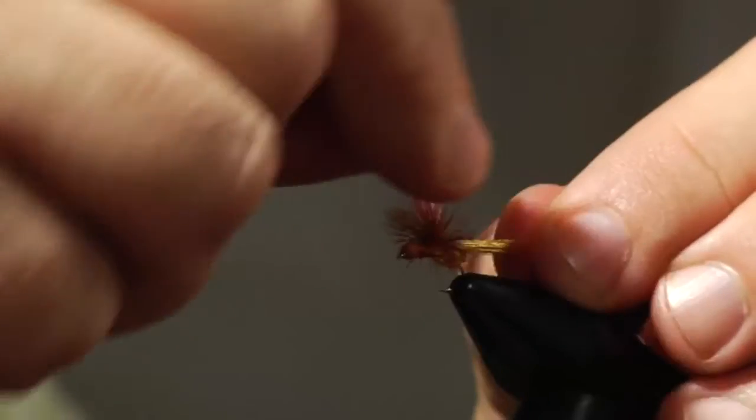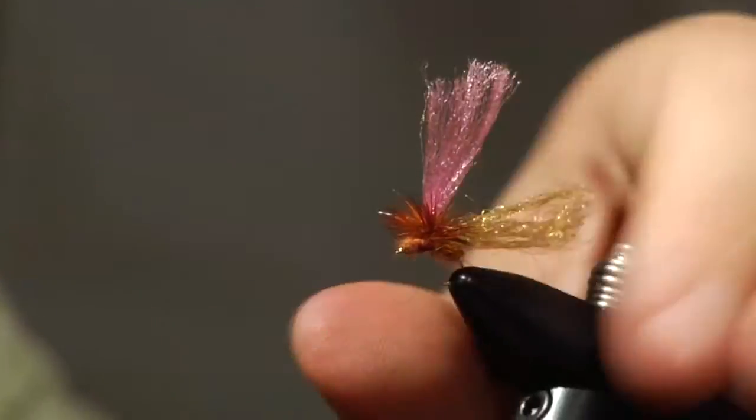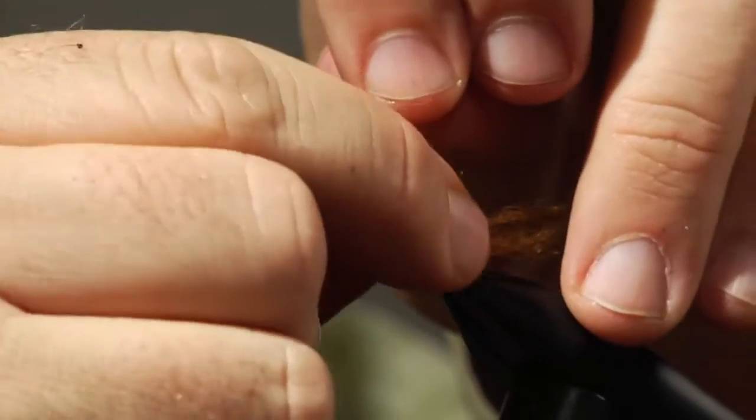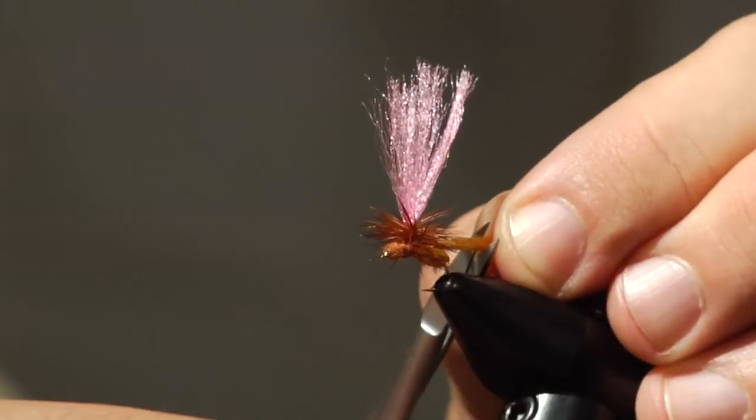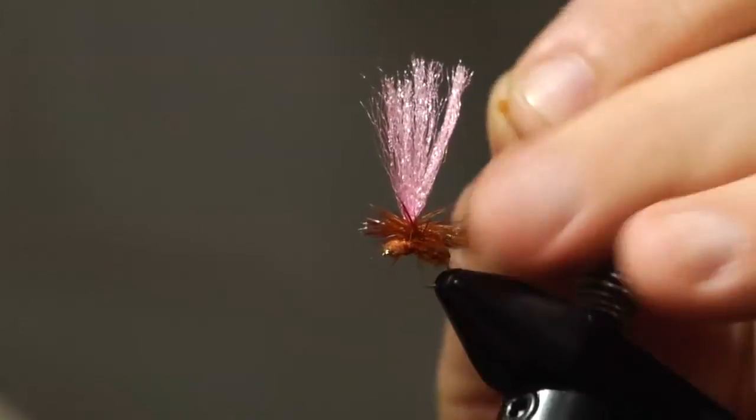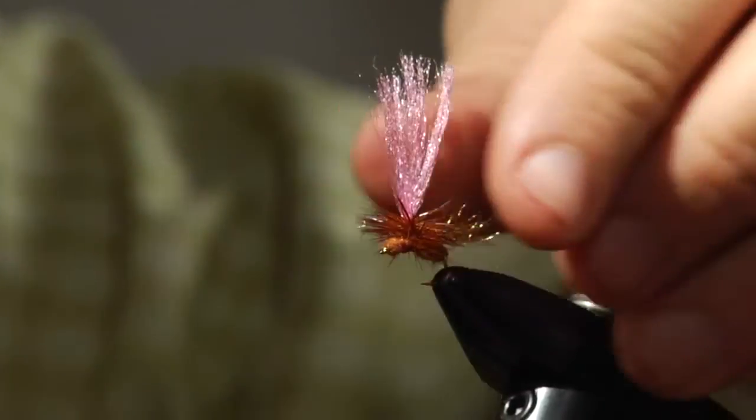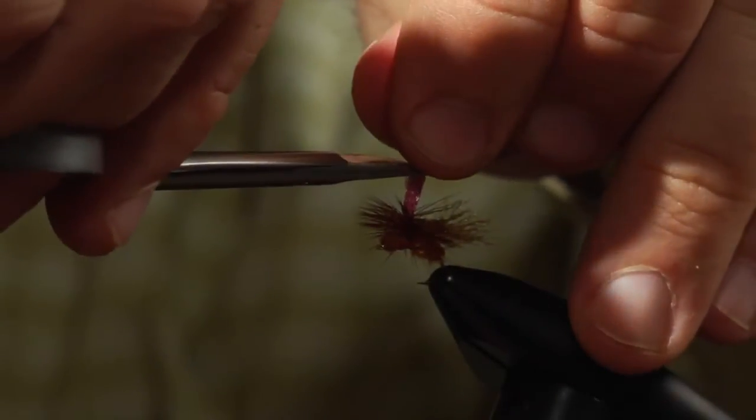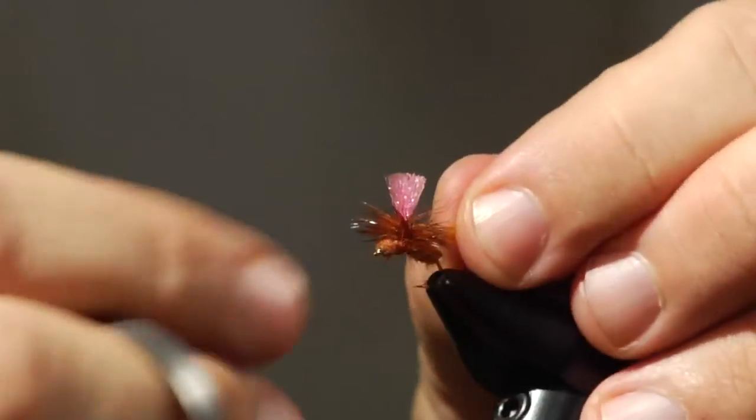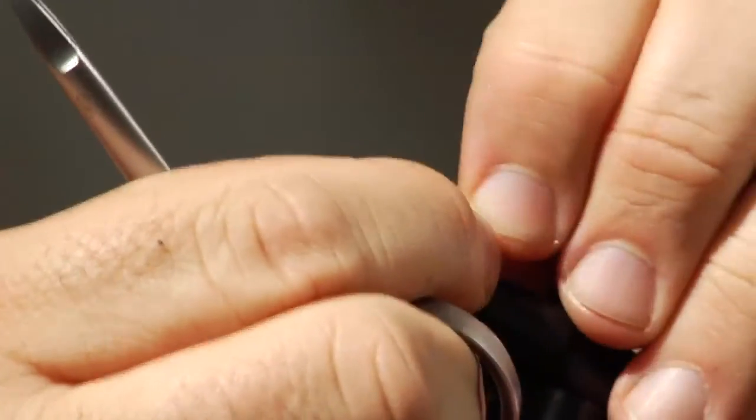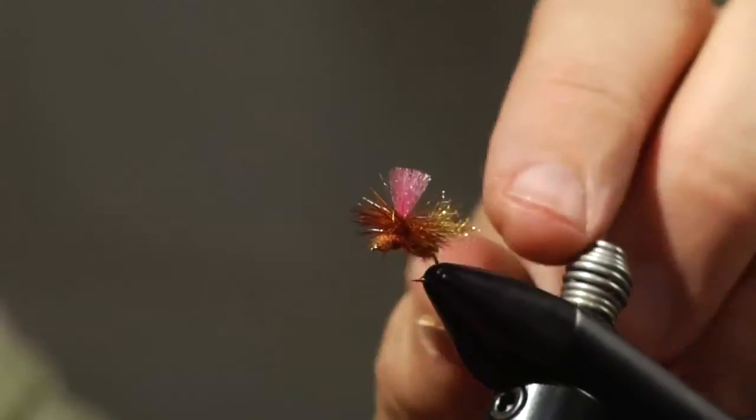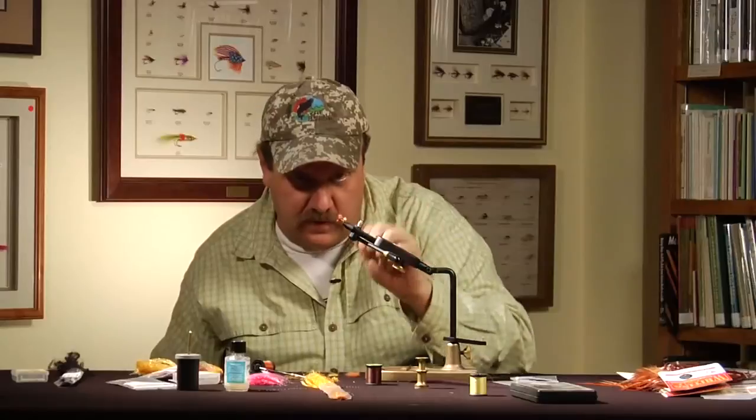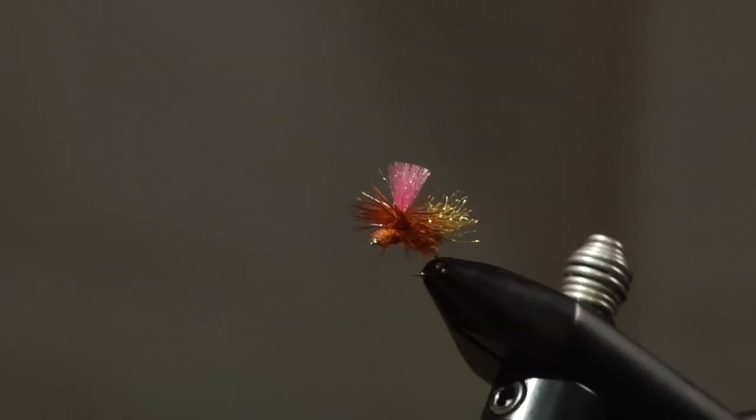Trim that out. Now I'm going to fluff the hackle up a little bit. Trim the wing about a shank length. And I'm going to come in and cut that post down. I think they got that wing a little bit too long so I'm going to come in and cut her down a little bit more. And there it is. Rusty flying ant.